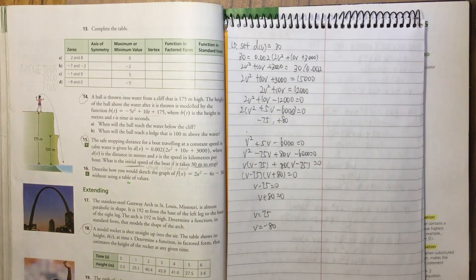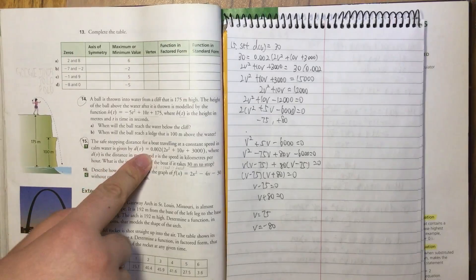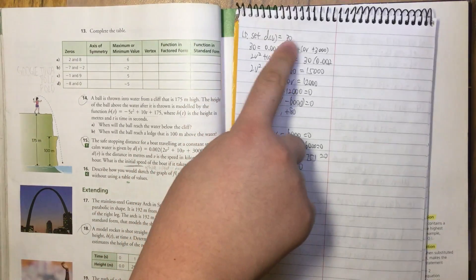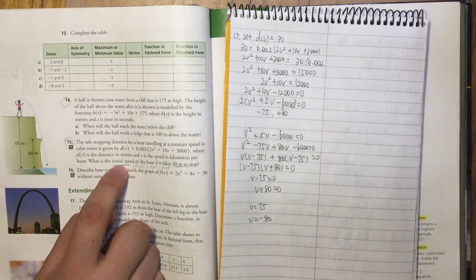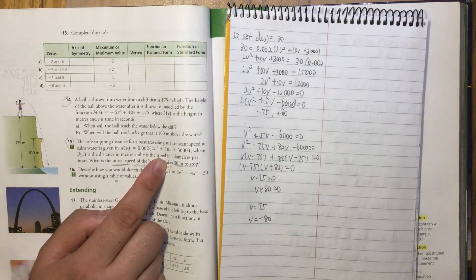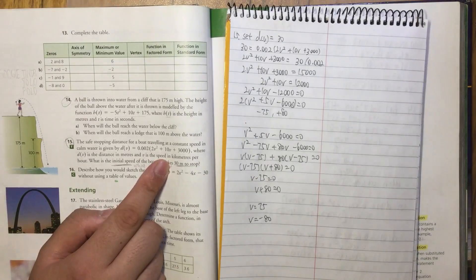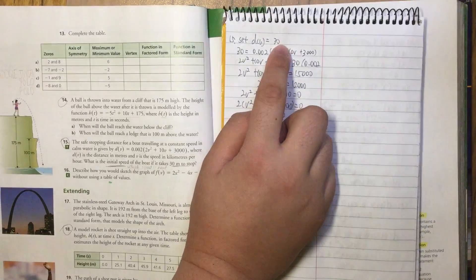For number 15, our first step is to set the distance as 30 meters because we're solving for the initial speed of the boat if it takes 30 meters to stop. So we put the distance here.